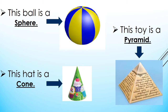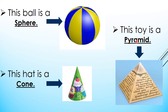Now look at this party hat. You can see the top face is a curve and the bottom face is a flat circular face. So this hat is a cone. And look at this toy. You can see the top faces are triangles meeting at a point, and the bottom shape is a rectangle or possibly a square. When triangles join together, they form a pyramid. So this toy is a pyramid.